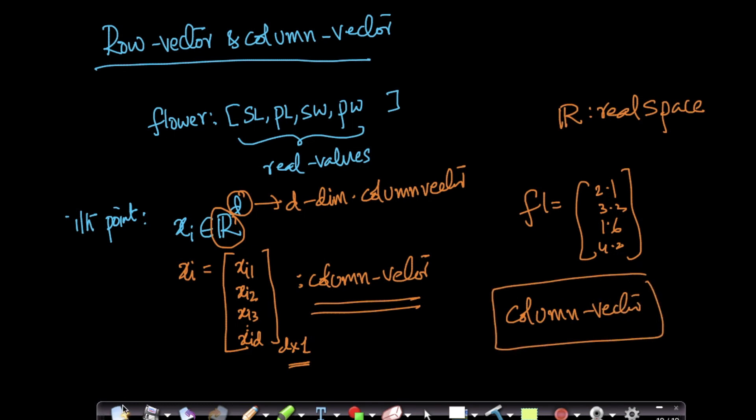There is also something called a row vector. And what is a row vector? If you have a data point xi which is represented as a row, as a single row, for example, if I have 2.1, 3.2, 4.6, 1.2, let us say, this is one row and four columns.